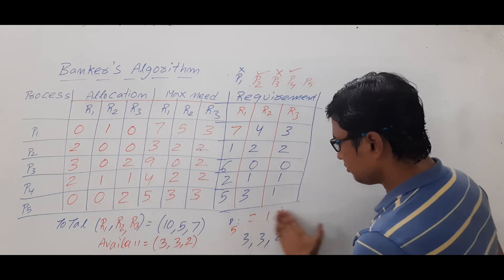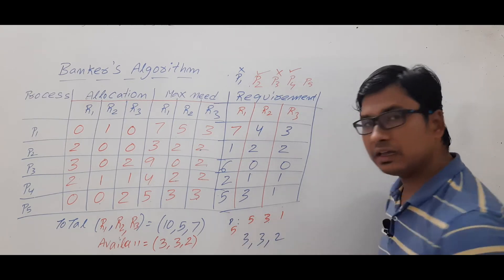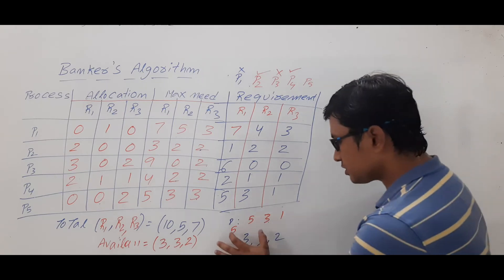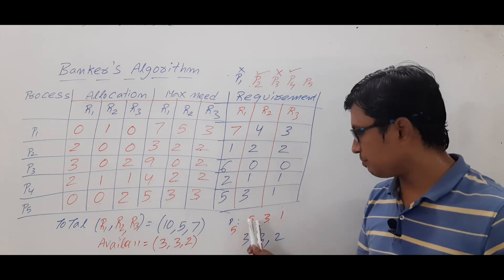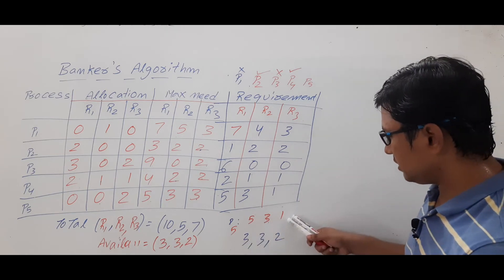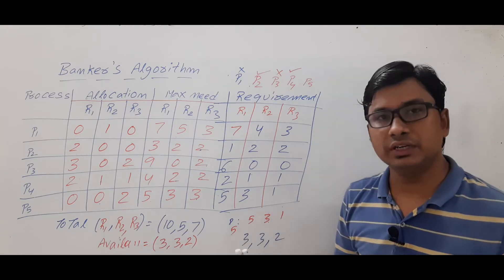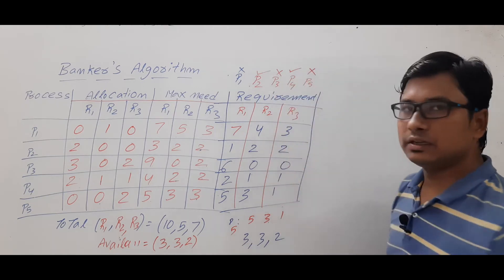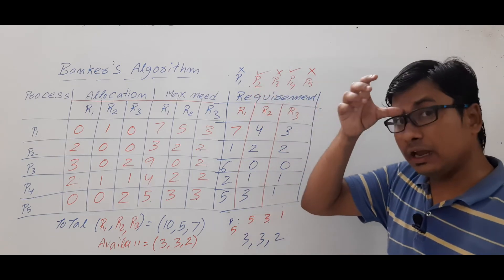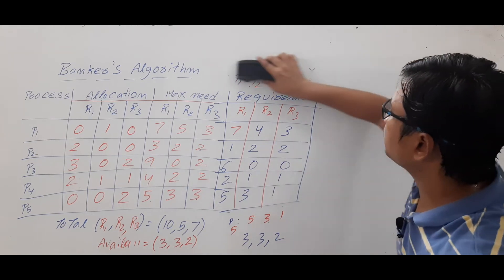Can we satisfy P5? P5 requires 5, 3, 1 but availability is 3, 3, 2. We cannot satisfy R1 for P5 because the need is 5 but availability is only 3. So currently we can allocate resources to P2 or P4 — either one is valid.